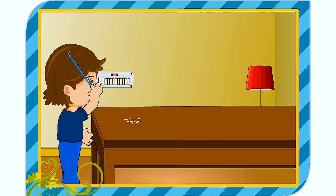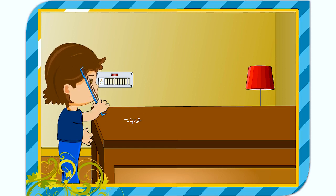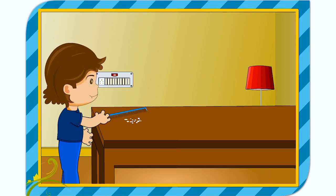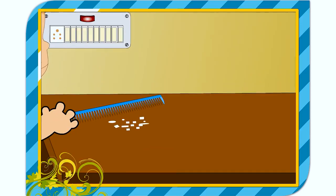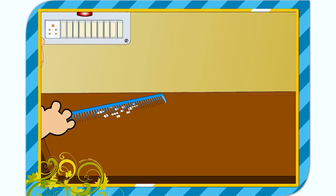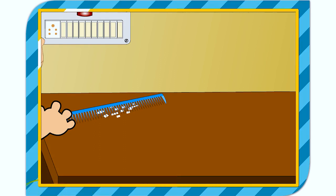If you rub a plastic comb several times on dry hair and bring it near a small piece of paper, they get attracted towards the comb. This happens because on rubbing the comb with the hair, the comb gets charged. Thus, the force exerted by a charged body on another body is known as electrostatic force.